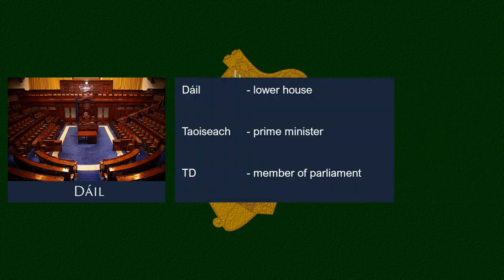We need to familiarise ourselves with a small number of Irish language terms if we're going to talk about Irish politics. The Dáil is the lower house of the Irish Parliament. The Taoiseach is the term used for the Prime Minister — it literally means Chieftain. T.D. means Member of Parliament; it literally means Teachta Dála, meaning a member or deputy of the Dáil.